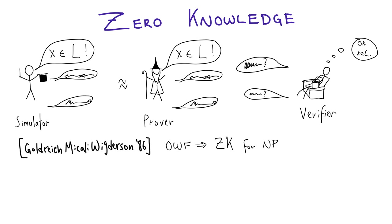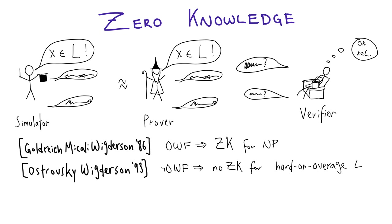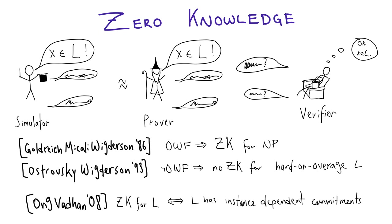Since zero knowledge was introduced, we now know a fair amount about complexity. If one-way functions exist, we have zero knowledge proofs for all of NP. If they don't, we only have zero knowledge proofs for languages that are trivial on average. The culmination of this is work by Ong and Vaidan showing we have zero knowledge for a language if and only if the language admits instance-dependent commitments.